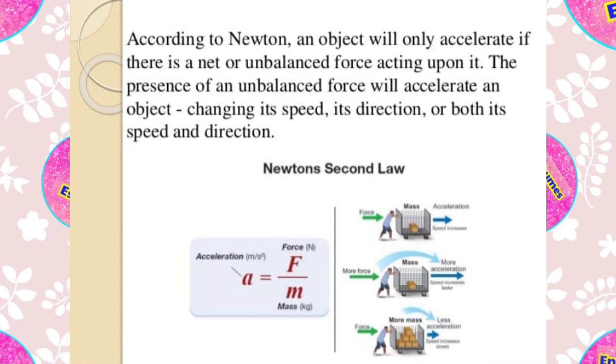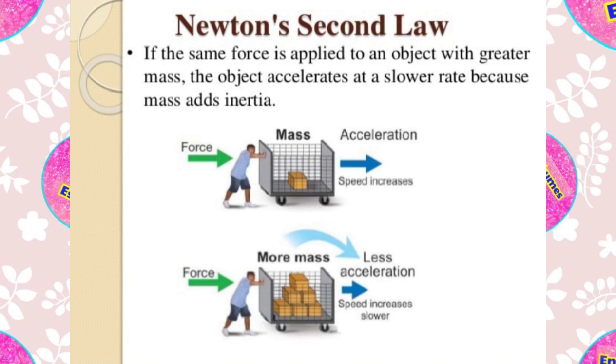According to Newton, an object will only accelerate if there is a net or unbalanced force acting upon it. The presence of an unbalanced force will accelerate an object, changing its speed, its direction, or both its speed and direction. Newton's second law states that the force acting on a body is equal to the rate of change of the body's momentum. If the same force is applied to an object with greater mass, the object accelerates at a slower rate because mass adds inertia.